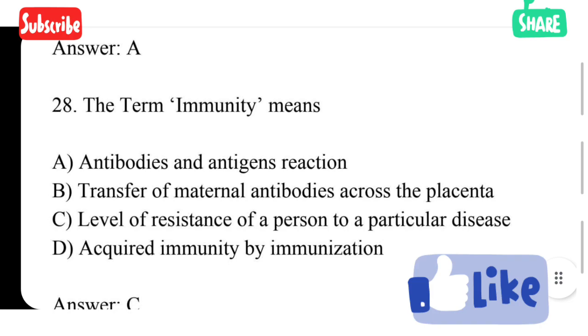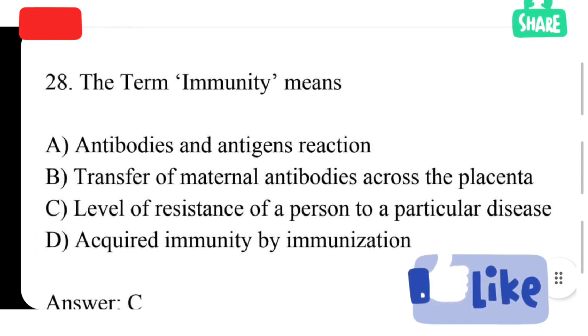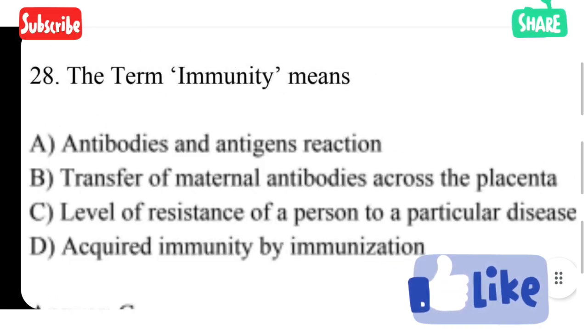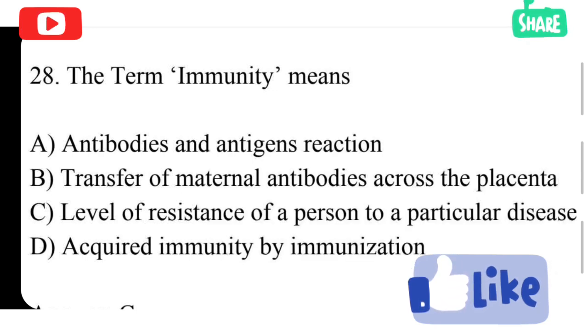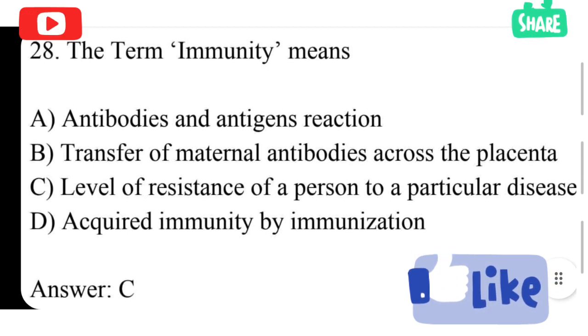The term immunity means option A antibodies and antigen reaction, option B transfer of maternal antibodies across the placenta, option C level of resistance of a person to a particular disease, option D acquired immunity by immunization. The correct answer is level of resistance of a person to a particular disease.